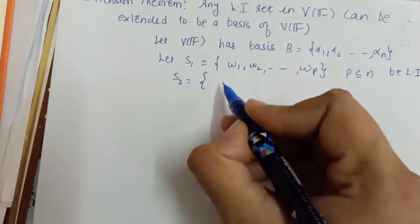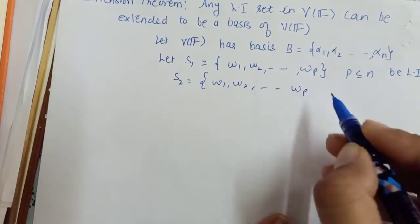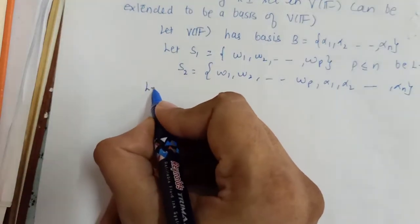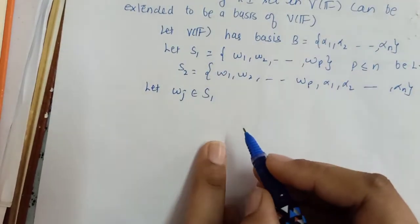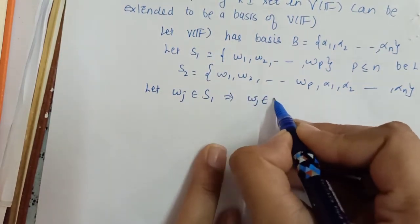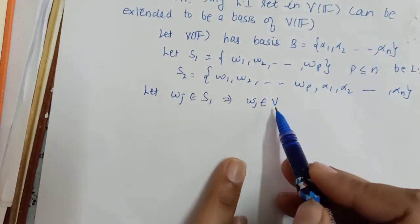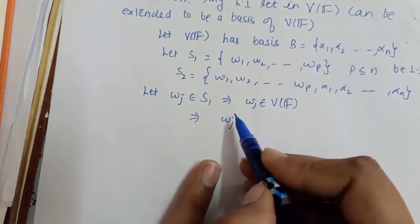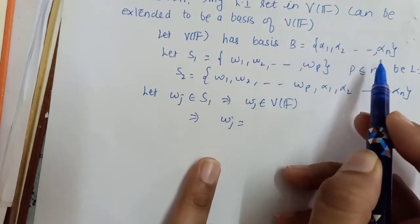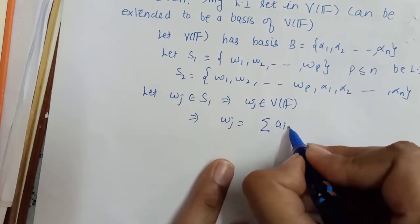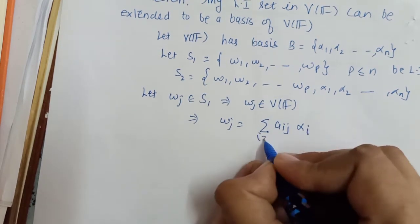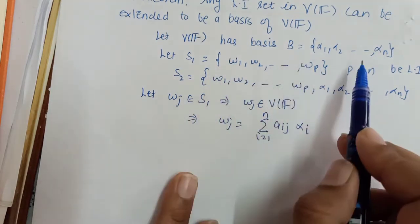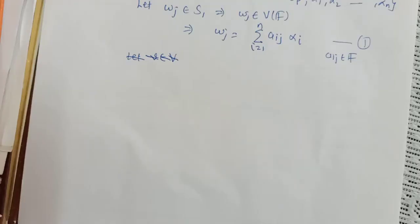We will make a new set S₂ by combining all the elements of S₁ and the basis elements. If we take some element wⱼ from S₁, it belongs to V, so it can be written as a linear combination of the basis B: wⱼ = Σ aᵢⱼ αᵢ, for i from 1 to n. Call this Equation 1, where the aᵢⱼ's are elements from field F.